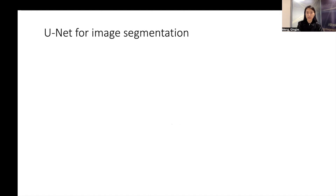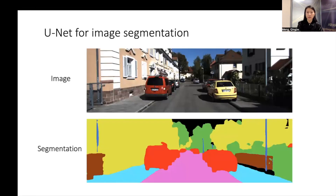So what is semantic segmentation? I will briefly introduce it. Given an image, if you assign each pixel to a class label, you will have a pixel-level segmentation result. It means that each pixel belongs to a specific class, and this is semantic segmentation. Here is an example. The top figure is an image of the street, and the bottom figure is the corresponding segmentation. In this segmentation, the different colors represent different classes, such as a car, the street, the tree, or other classes.